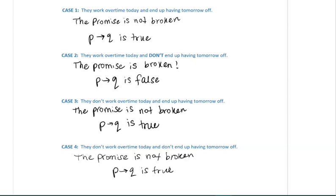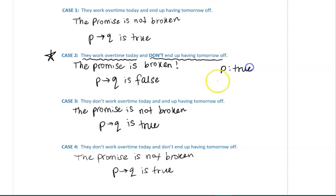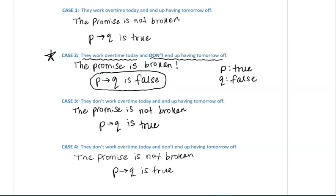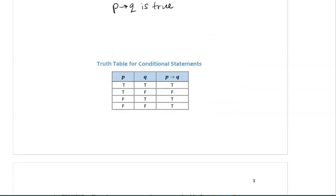By examining these four cases, the promise was broken only in the case where the antecedent was true — they work overtime today — and the consequent is false — they don't end up having tomorrow off. The antecedent P is true and the consequent Q is false. That is the only case in which the conditional statement P→Q is false — in other words, when the promise was broken. This information can be summarized in a truth table.